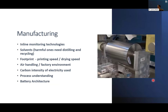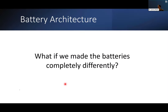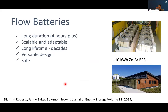There are a huge number of different areas in manufacturing we can make more sustainable. What I'm going to focus on is battery architecture — what if we made batteries completely differently? Flow batteries are not particularly suitable for mobility applications but are particularly suitable for long-duration storage and have long lifetimes. If we're looking at sustainability, we want the battery in use for as long as possible.